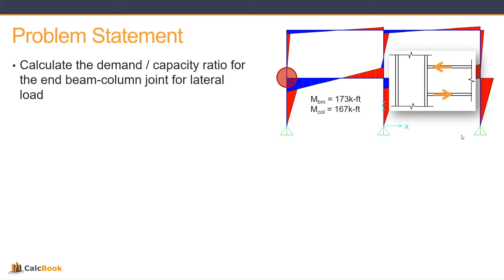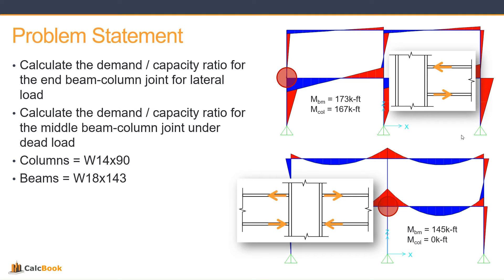We've got our column, and then we've got our tensile and compressive forces from the beam, and our moments pulled from our analysis model. We have a moment in the beam of 173 kip-foot, and the moment in the column of 167 kip-foot. We're also going to look at a dead load case of the middle beam-column joint, so we get that opposite loading from each side onto the column and can check that web compression buckling. Our columns are W14 by 90, and the beams are W18 by 143.